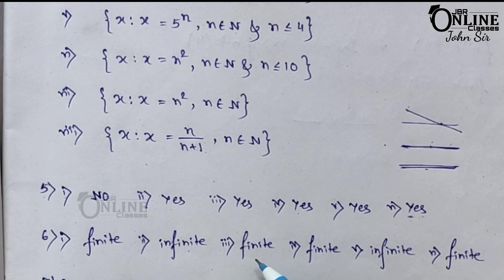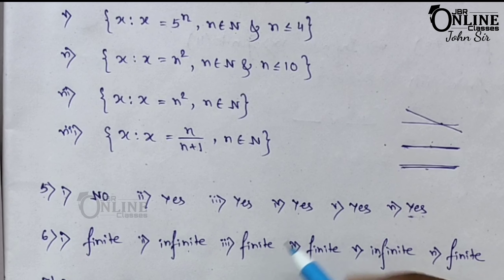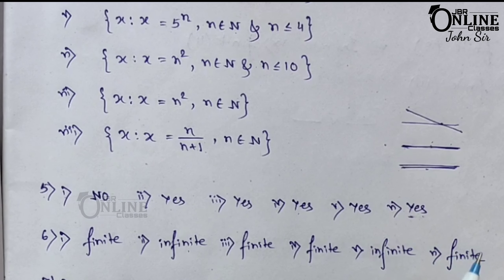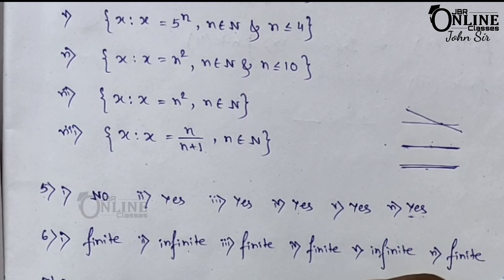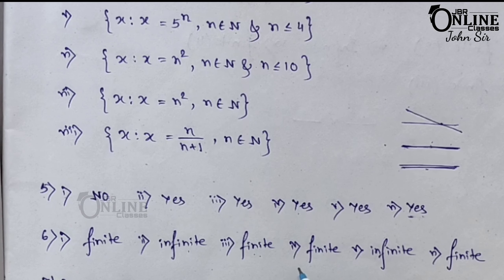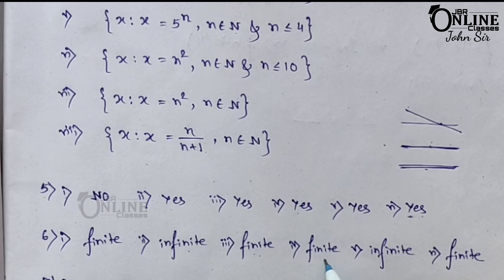Third one: the set of animals living on the earth. This has a finite value. So it's a finite set. Fourth one: the set of consonants in the English alphabet. Definitely it's a finite set.